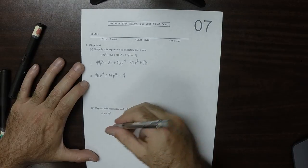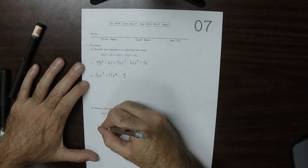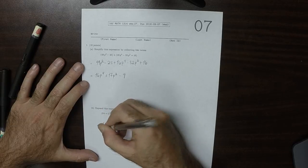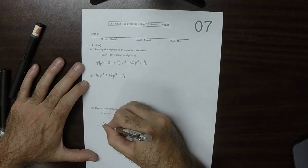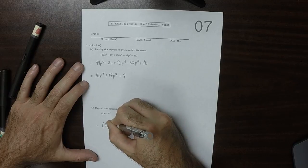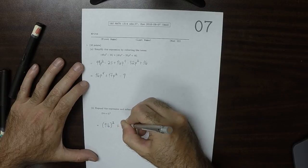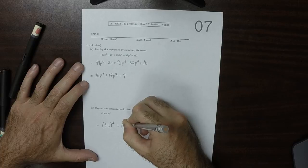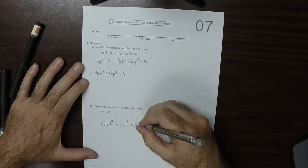For part B, well, the formula is for a binomial squared, is that you square the first term, you square the last term, and then you add twice the product of the first and last term.